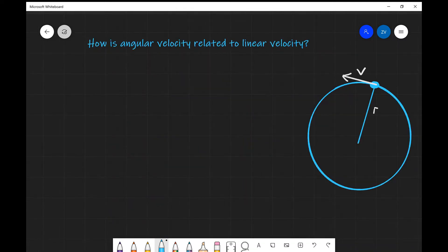Now let's have a look at a very important question on how is angular velocity related to linear velocity. Remember, angular velocity is measured in radians per second, whereas linear velocity is measured in meters per second.